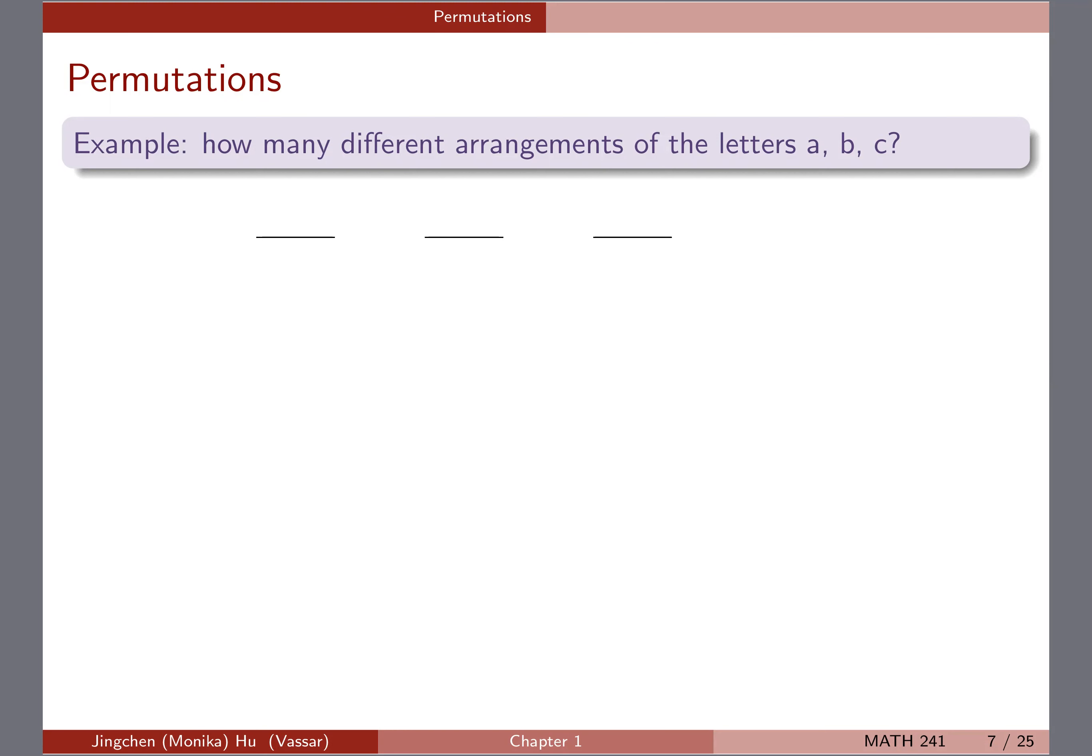So if you have three different letters to start with, and we try to fill the position one by one, that means for the first position, you have three different choices because you have three different letters. And once you go to the second position, because you already have chosen one letter for the first position, you're only left with two letters for the second position. Once you move to the third position here, you're only going to get one choice because the first two already have taken the other two.